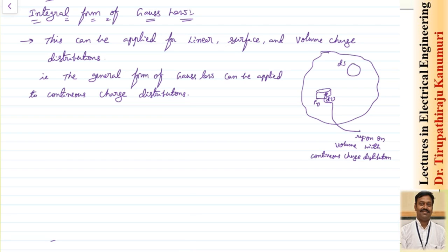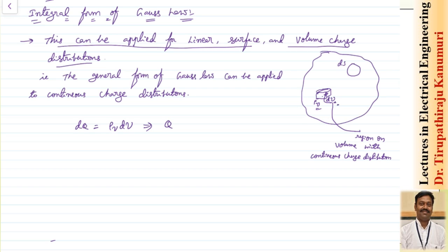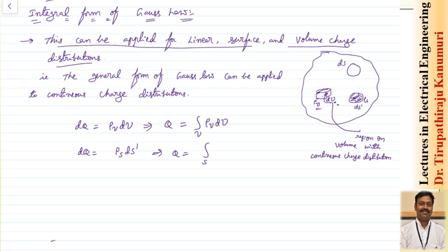The integral form of Gauss's law can be applied for linear, surface, or volume charge distributions. For a volume charge density ρ_V, the total charge enclosed is the volume integral of ρ_V dV. For a surface charge density ρ_S, the charge enclosed is the surface integral of ρ_S dS', and this equals the closed surface integral of D dot dS, where dS is the outer enclosing surface.